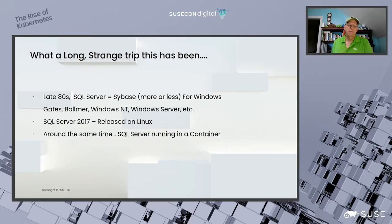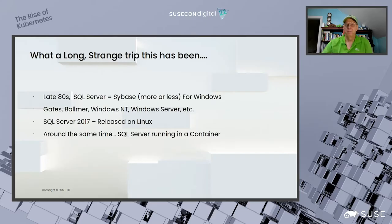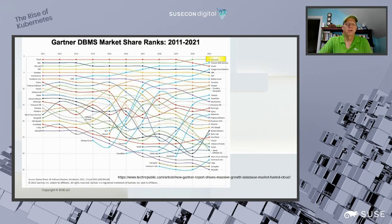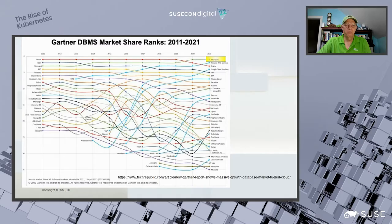Sybase is still around as a product called ASE — it's an SAP product. Around 2017 when SQL Server came to Linux, the idea of running SQL Server in a container emerged, since almost all containers were running Linux at that time. Even today, we still see it mostly running as a Linux container. SQL Server remains a very popular database, in the top three for the last ten years and number one in market share for the last two years. It's still a very important product in most enterprises.